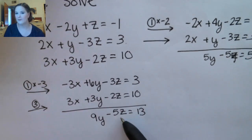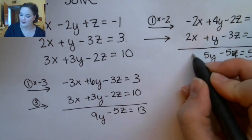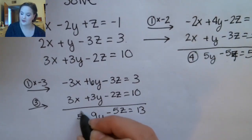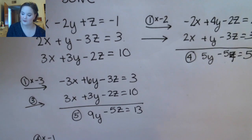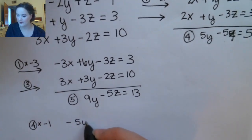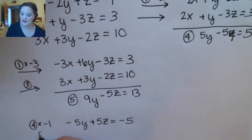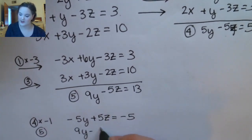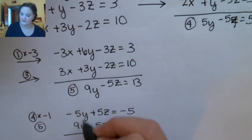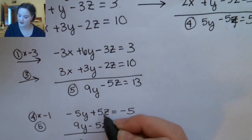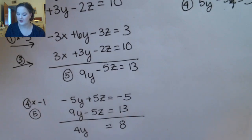Now I can see I have negative 5z and negative 5z, so those will be easiest to eliminate. I'll label this equation 4 and the other equation 5. Taking equation 4 and multiplying by negative 1 gives minus 5y plus 5z equals negative 5. Adding equation 5 — which is 9y minus 5z equals 13 — the z terms cancel as intended, giving me 4y equals 8. Dividing both sides by 4 gives y equals 2.